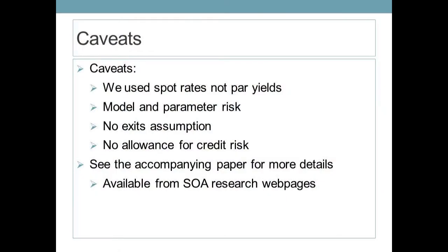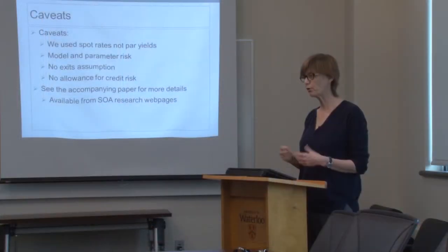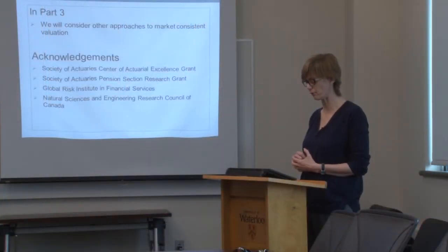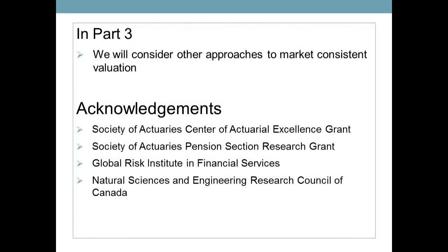Some caveats: actual crediting rates are based on par yields, not spot rates, but results are relatively close. There is model and parameter risk, both explored in the accompanying paper downloadable from the SOA research web pages under pension research. We have assumed no exits, though these can be accommodated by taking a weighted average across horizon times. We have also assumed no allowance for credit risk, though market valuation can be adjusted to reflect the default risk of the plan sponsor. In the third and final installment, we will look at other approaches to market-consistent valuation based on different definitions of the accrued benefit. Acknowledgements go to various agencies that have supported this research, the actuarial science programs at the University of Waterloo, and co-authors David Saunders and Mike Jew.